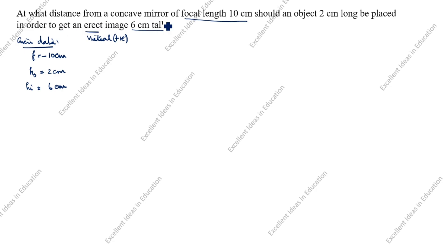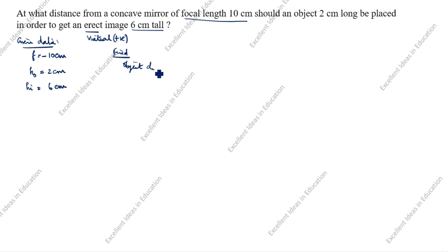At what distance from the concave mirror — that means we need to find the object distance and the image distance. Object distance is u and image distance is v.